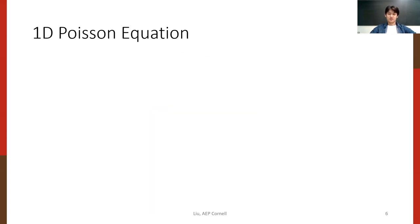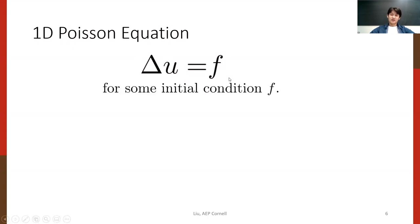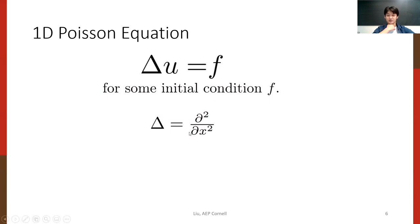As a simple example, we'll look at the 1D Poisson equation, given by the Laplacian of u equals f, where f is a given source function and we're solving for u. This is used a lot in physics. As a quick vector calculus refresher, the Laplacian in one dimension is just the second spatial derivative.